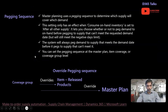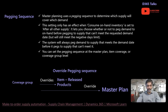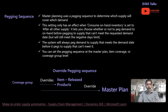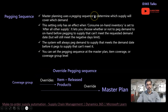Coming back to our topic — the next important concept regarding master planning, especially with respect to coverage group, is the pegging sequence. Configuring the pegging sequence is very important because you are telling the system how to handle existing supplies in terms of pegging a particular demand with your supply. Pegging defines against each requirement what logic you want to use to align or peg the supply.